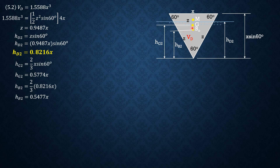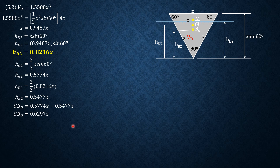hg2 = two-thirds of x sin60° = 0.5774x. hb2 = two-thirds of hd2 = two-thirds of 0.8216x = 0.5477x. GBo = hg2 minus hb2 = 0.5774x minus 0.5477x = 0.0297x.